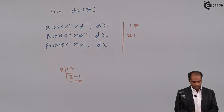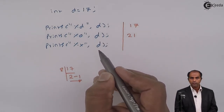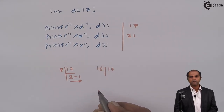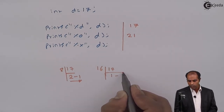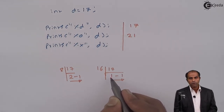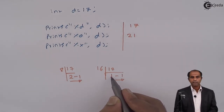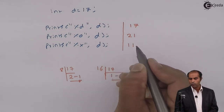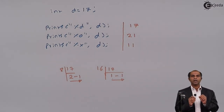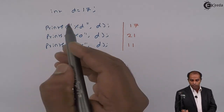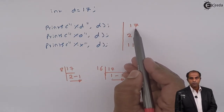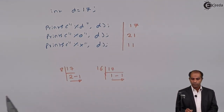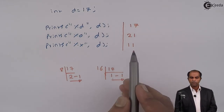The %x specifier displays the hexadecimal value of d. To get the hexadecimal equivalent, take 17 and divide by 16: 16 goes once into 17 with remainder 1, giving quotient 1 and remainder 1. Since the quotient 1 is less than 16, stop. Collecting the digits gives 11, so %x displays 11 as the hexadecimal equivalent of 17.